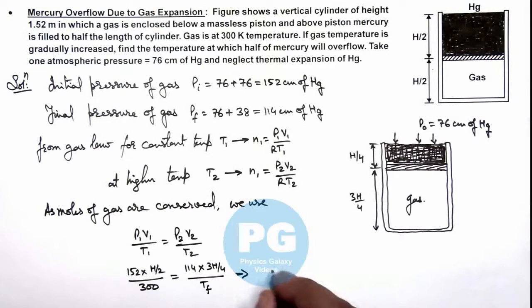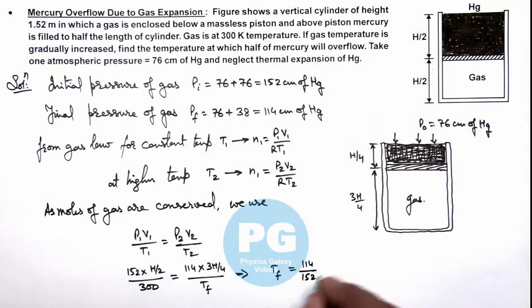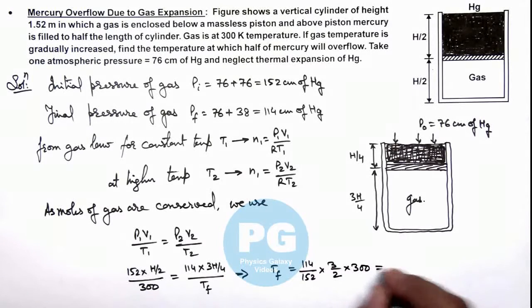On simplifying, here we get the value of final temperature as 114 by 152 multiplied by 3 by 2, multiplied by 300. On simplifying, we get 337.5 Kelvin.